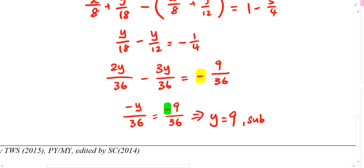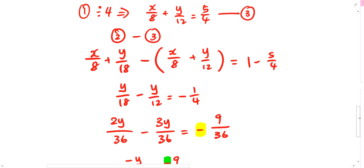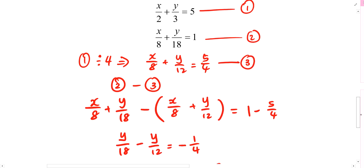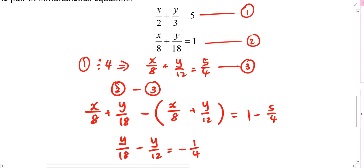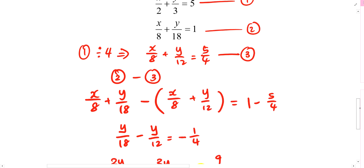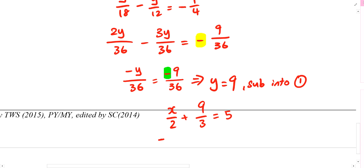Therefore, we sub this into which equation you want to sub it into? One. Okay. Fine. Sub into equation number one. So we've got X over 2 plus Y over 3 is 5. X over 2 plus 9 over 3 equals to 5. So simplify. X over 2 equals to 5 minus 3 which is 2. X equals to 4.